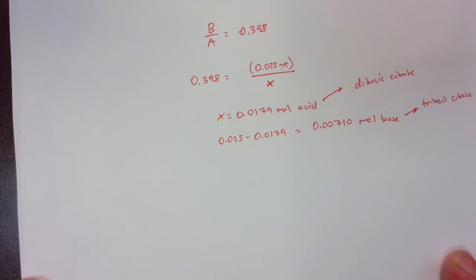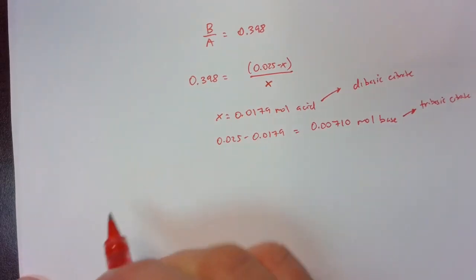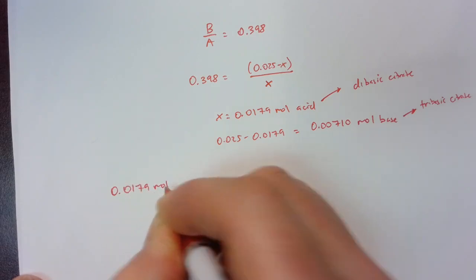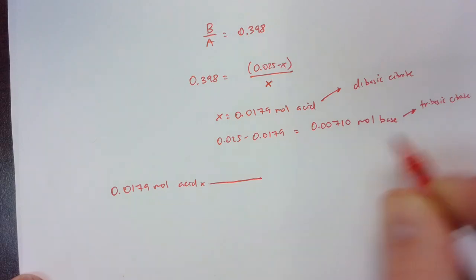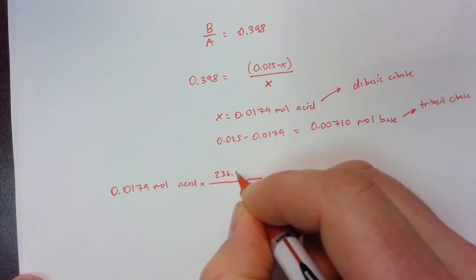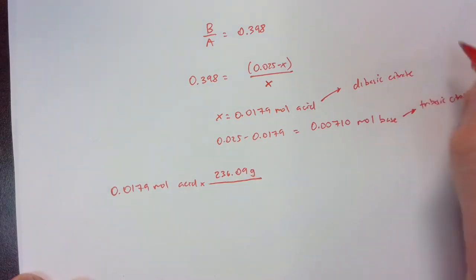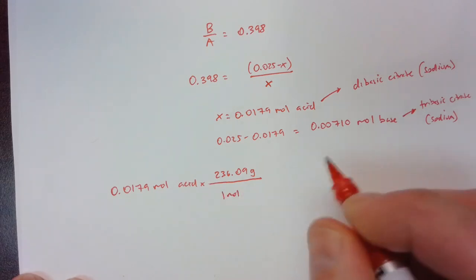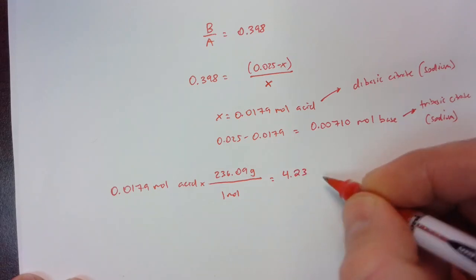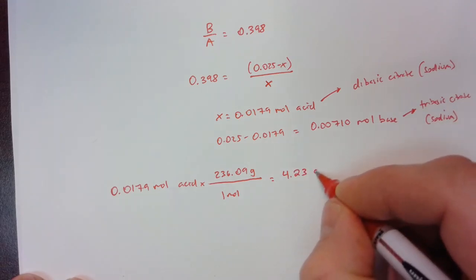And then we do the same calculation as before with molar mass. 0.0179 moles of acid. The dibasic citrate has a molar mass of 236.09. And again, this is sodium. Sodium dibasic and sodium tribasic. Want to be clear about that. And so the number of grams of the dibasic disodium citrate is going to be 4.23.